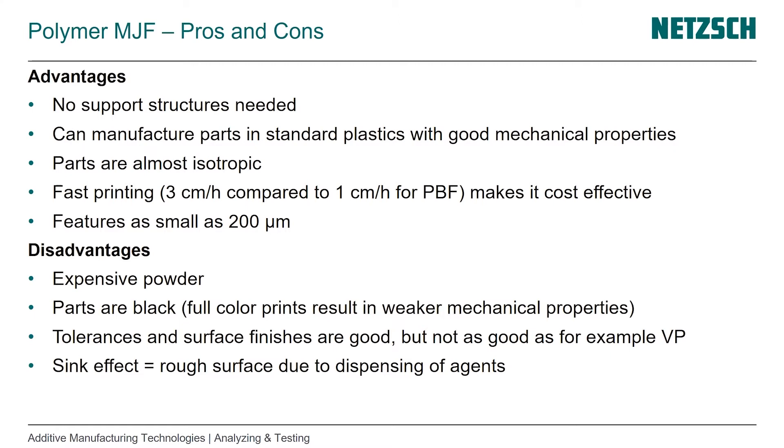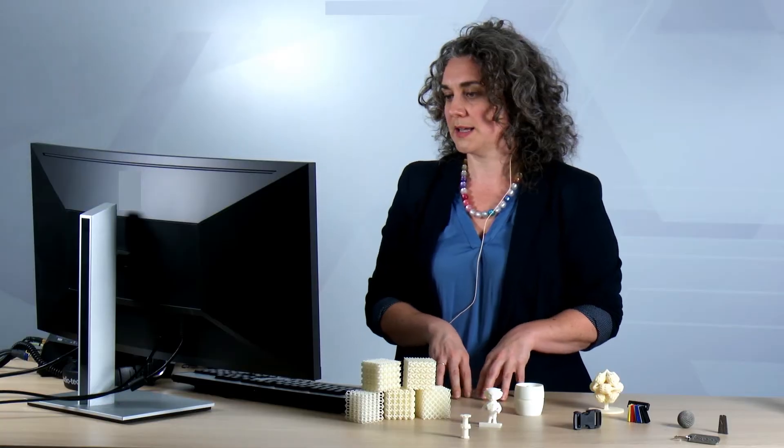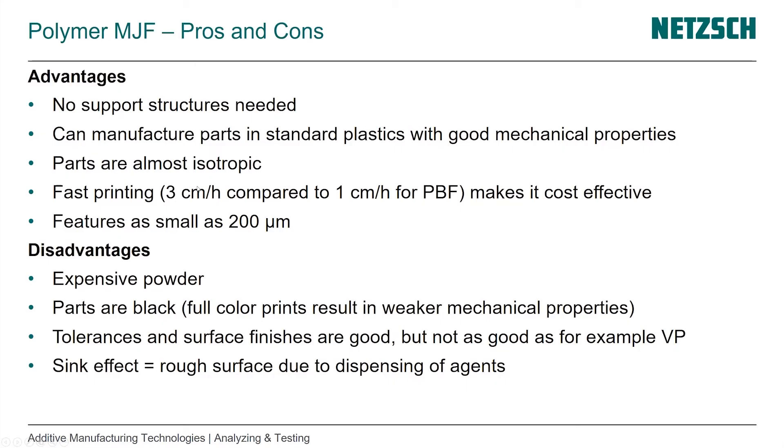But the process is a bit faster. HP claims it's three centimeters per hour compared to one centimeter per hour in powder bed fusion, which makes it more cost-effective and really pushes and challenges the cost of other processes. Features can be as small as 200 micrometers.